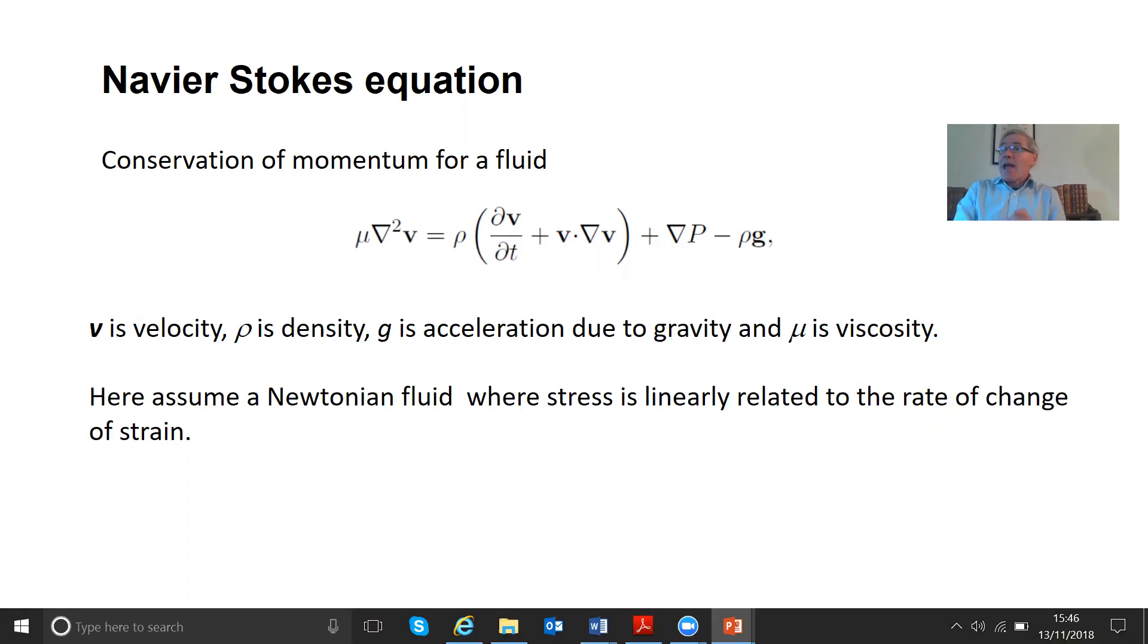Then what about the m term or the ma term? Here is the fluid density, so this is mass per unit volume. We're looking per unit volume of fluid, and then dv by dt, that's the acceleration. But there is this second term, the v dot grad v term. It's quite important. Where does that come from? Well, as the fluid moves, it goes to a new physical location where the local velocity may be different. So there is a change in velocity simply through its movement. That's what the v dot grad v term equals.